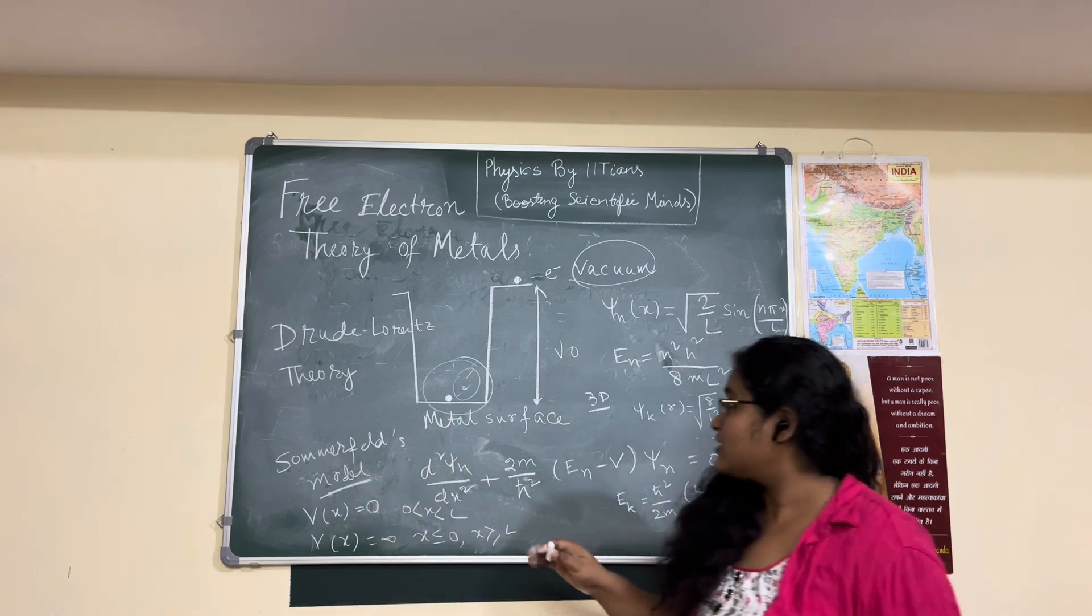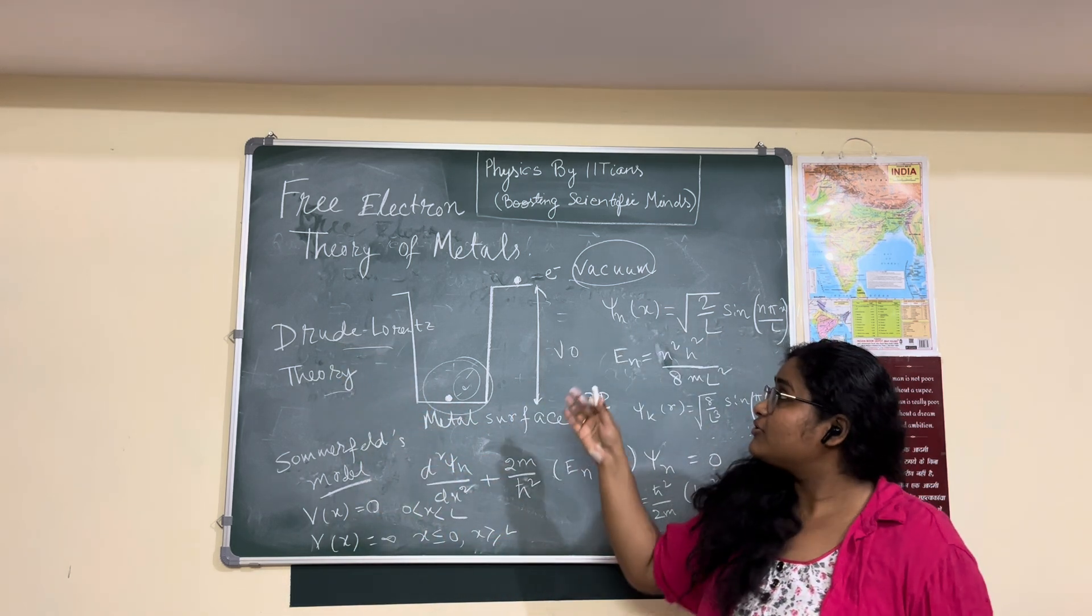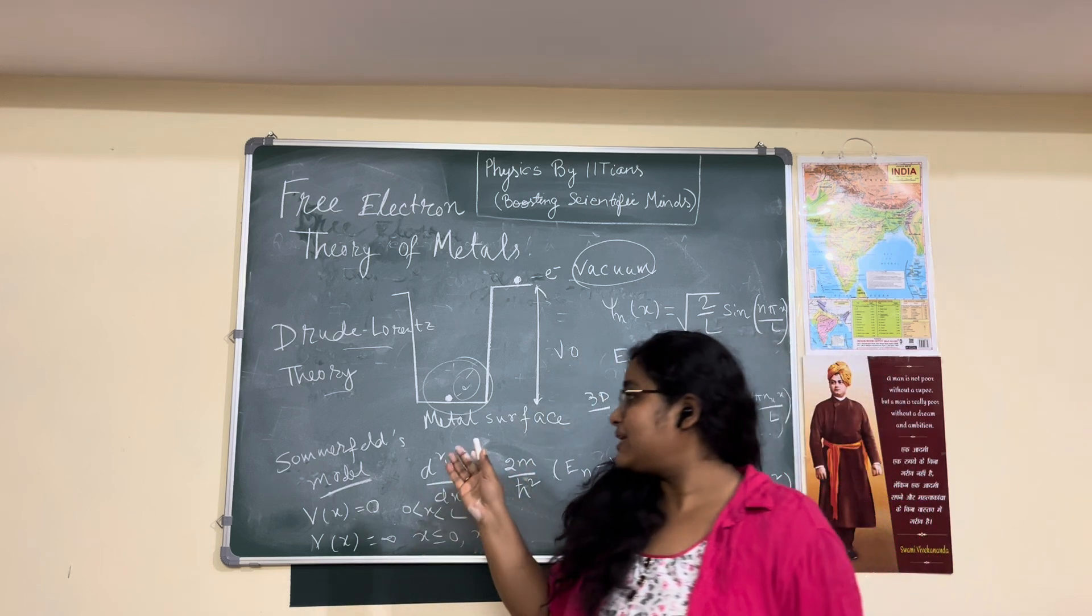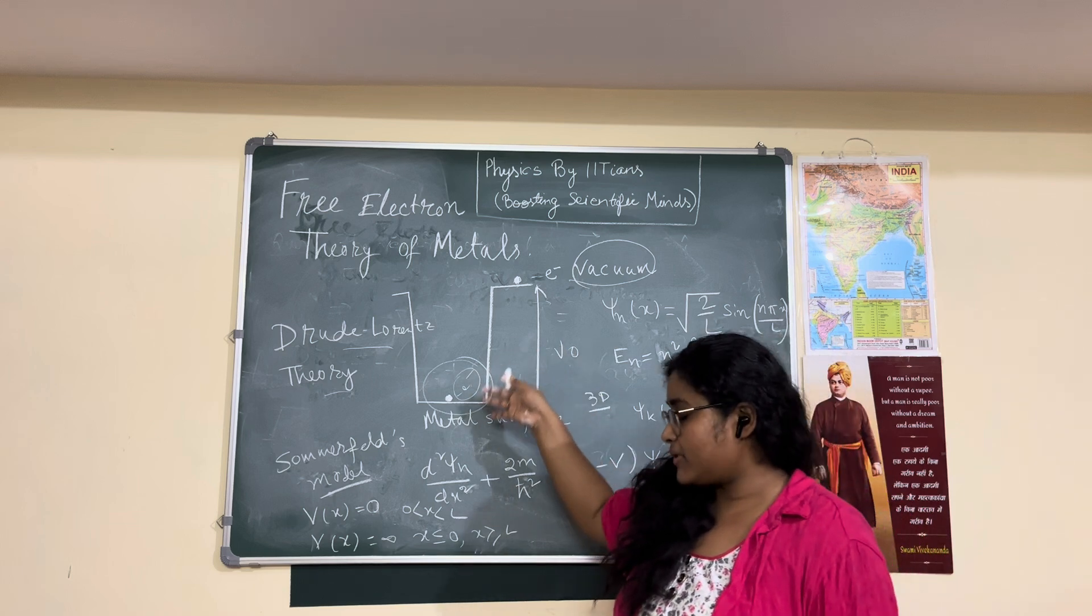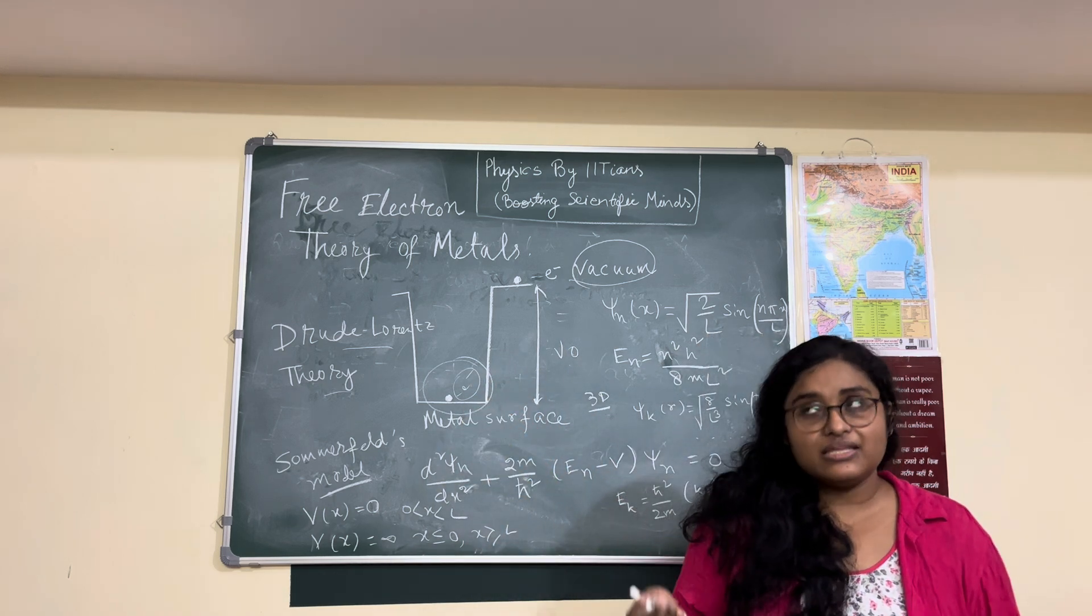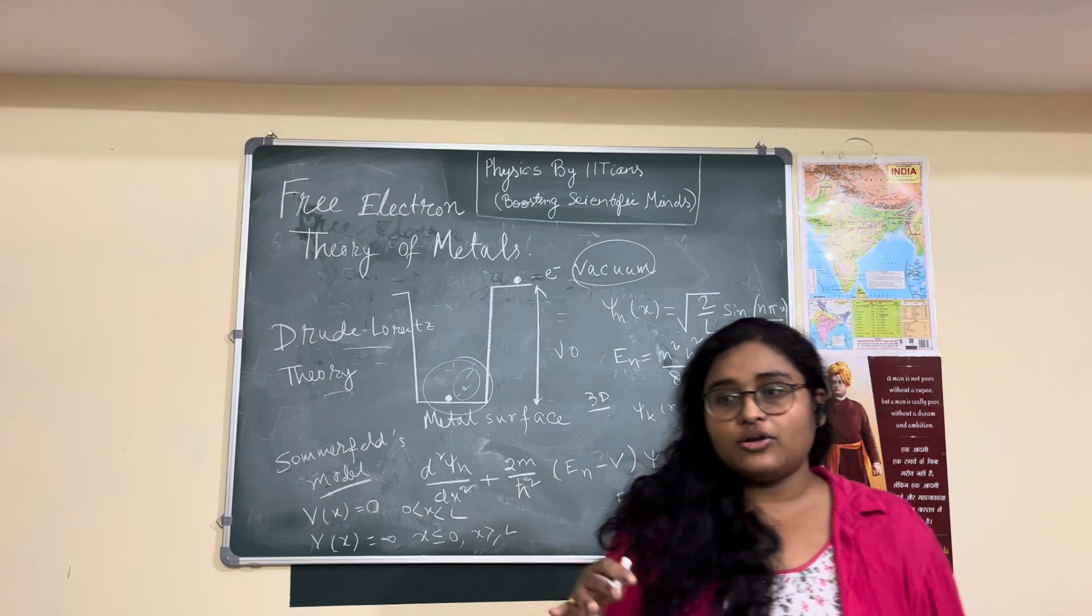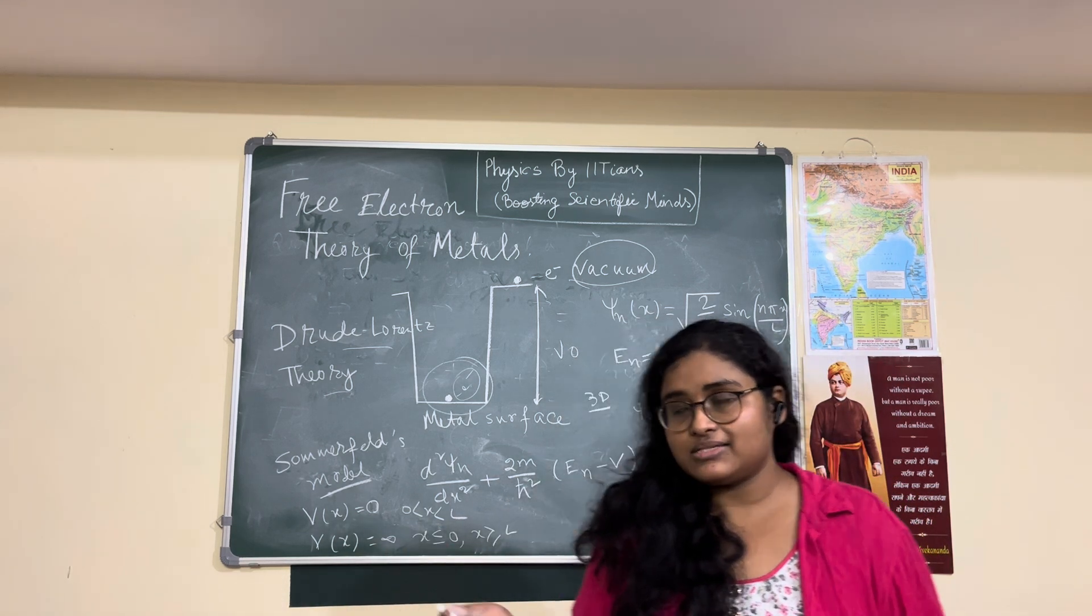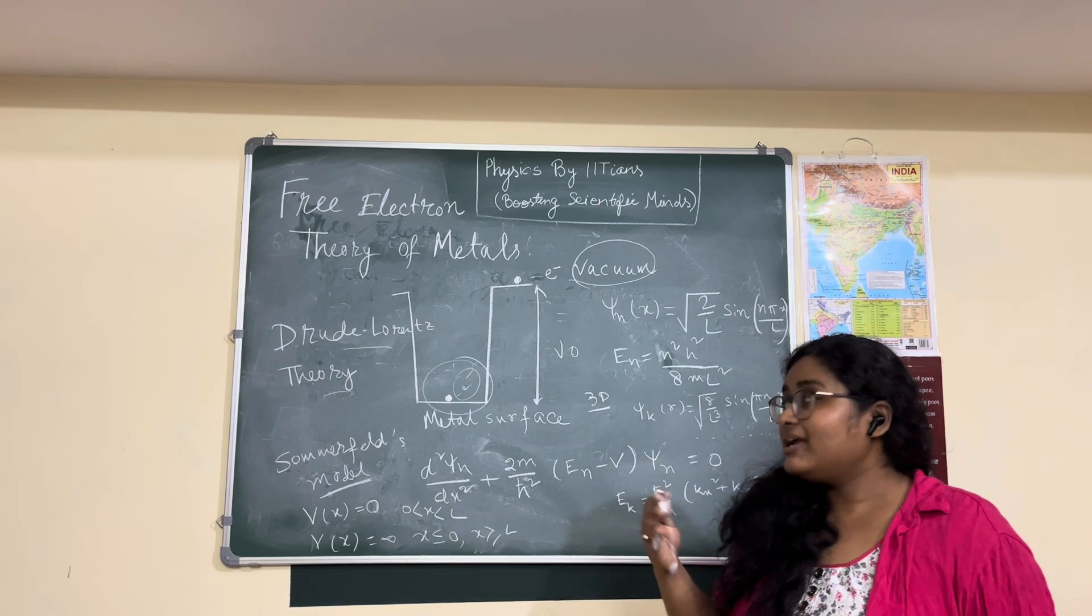But they are certainly bound with some bound potential V naught. And from that model we understand the resistivity and conductivity from that crude approximation, which is also known as free electron theory of metals. Since this kind of model could not explain many things, just like specific heat and many more details.